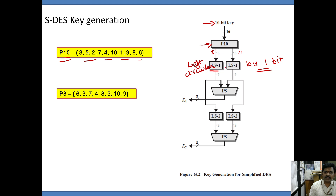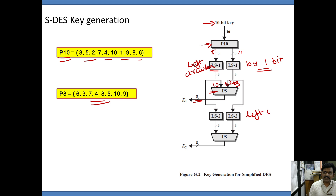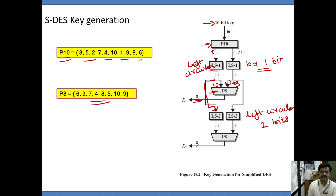Each half undergoes a left circular shift by 1 bit, and those 5 bits are again given to a permutation operation, which is a compression operation. The total 10 bits get compressed to 8 bits with the help of the P8 table, which discards 2 bits to produce an 8-bit round key. The initially shifted bits then undergo a further left circular shift by 2 bits, and the two halves again undergo a left circular shift by 2 bits. Those 5 bits each again undergo the compression permutation operation to get the round key for the second round.